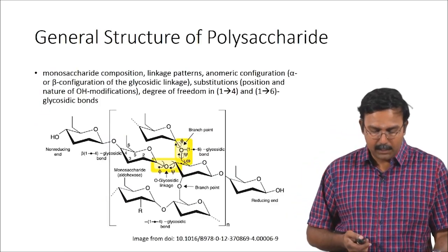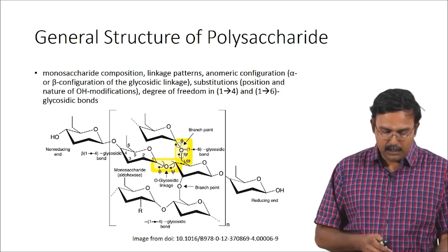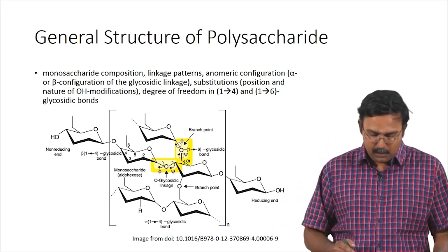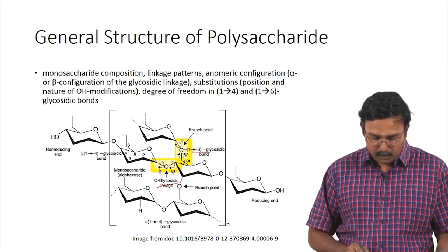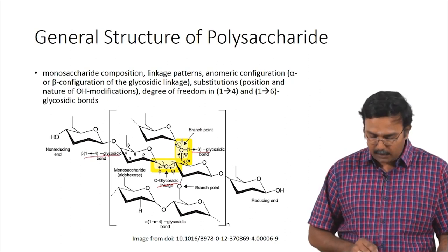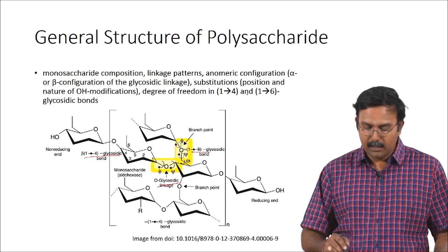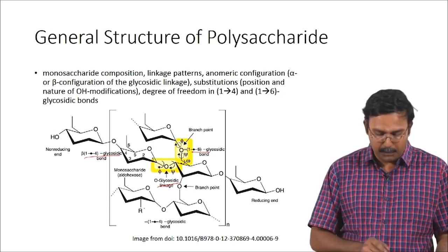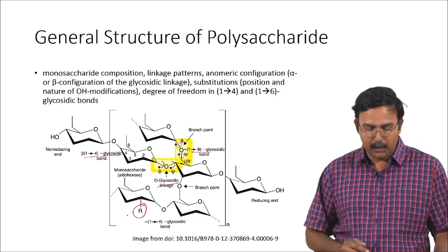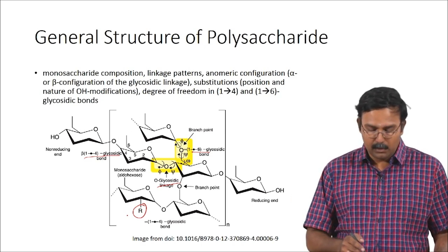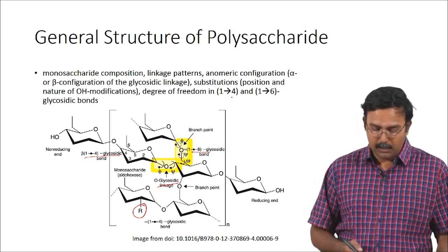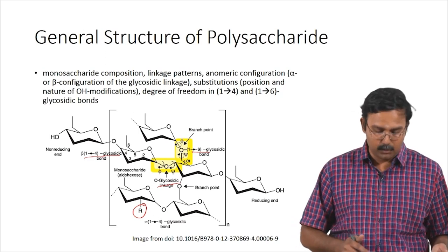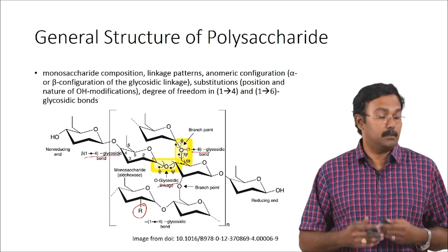This is a general structure of a polysaccharide. You have different monosaccharide compositions and different linkage patterns — a 1,6 glycosidic bond here, an O-glycosidic linkage, a beta 1,4 glycosidic bond, and so on. You can also have different substitutions at the position of the hydroxyl group, and also different degrees of freedom because of these glycosidic bonds. This creates the general structure, and you can keep changing this based on the groups and monomers present to get different polysaccharide structures.